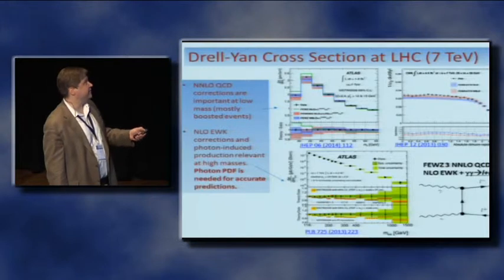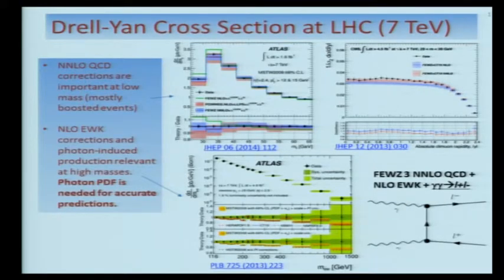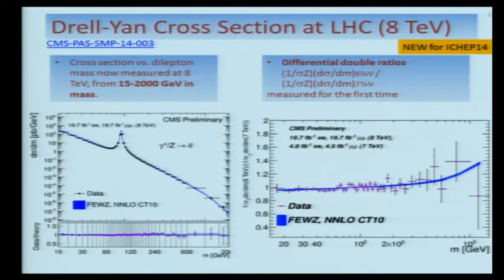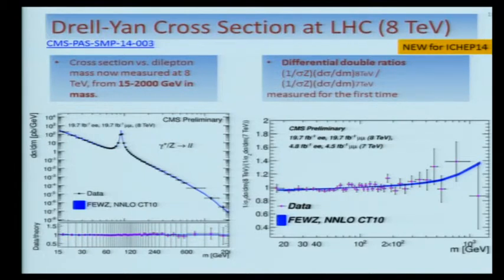Two things we've learned: to describe the low-mass data accurately, NNLO QCD corrections are important, as shown by the ATLAS and CMS comparison which shows better agreement with next-to-next-to-leading-order. Meanwhile, at the high-mass stage, next-to-leading-order electroweak corrections and photon-induced production of dilepton pairs are also important — at the TeV scale, understanding the photon PDF becomes essential. A new ATLAS measurement of the Drell-Yan cross-section shows excellent agreement with candidates all the way up to 2,000 GeV. CMS also combines 8 TeV and 7 TeV data to construct a differential double ratio in the mass shape, measured for the first time, and the data agree with the precise QCD prediction quite well.